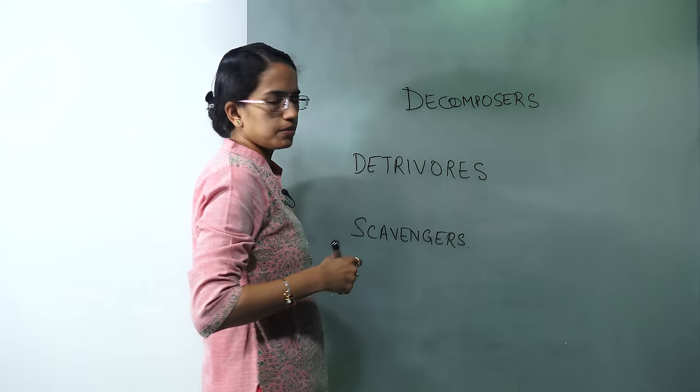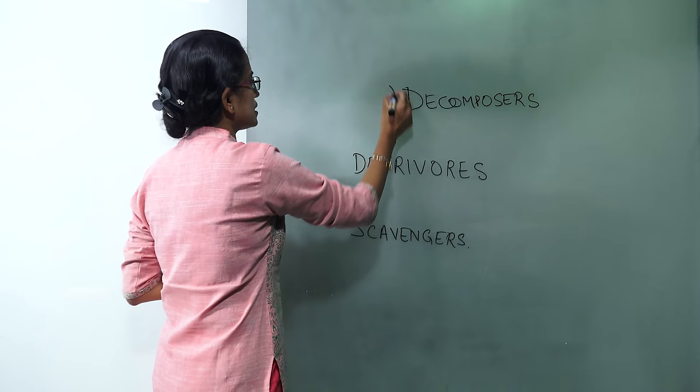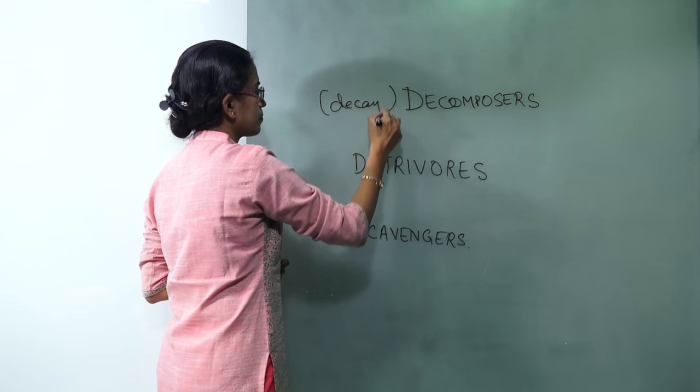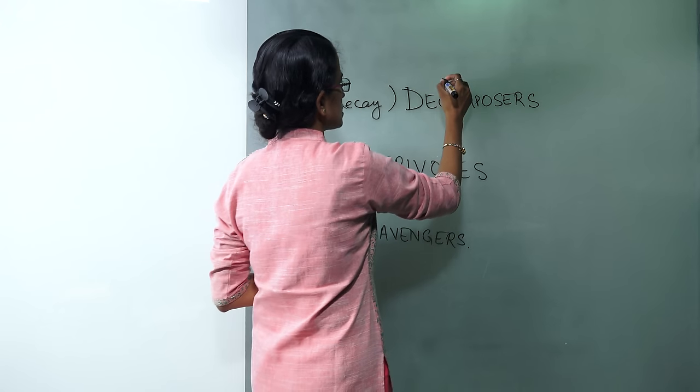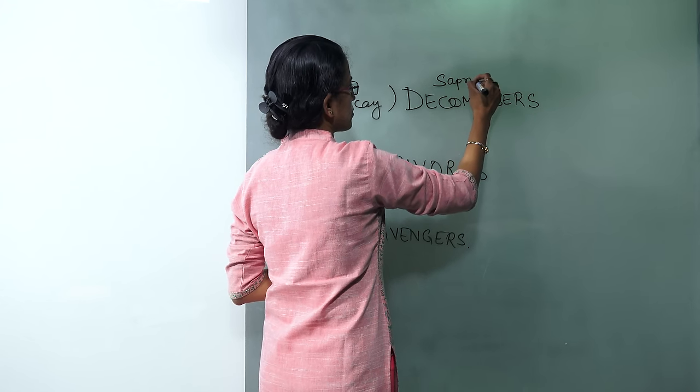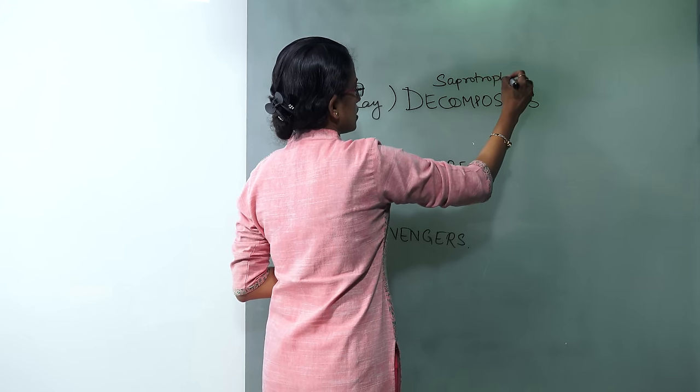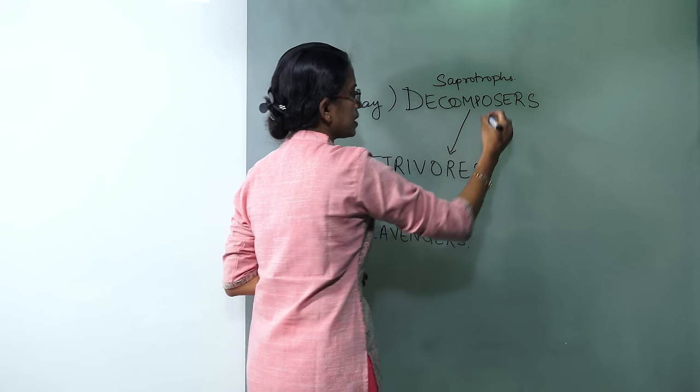So let's start with decomposer. As the name suggests, they basically help in decay. Now decomposers are also known as saprotrophs. These decomposers can be of two types.